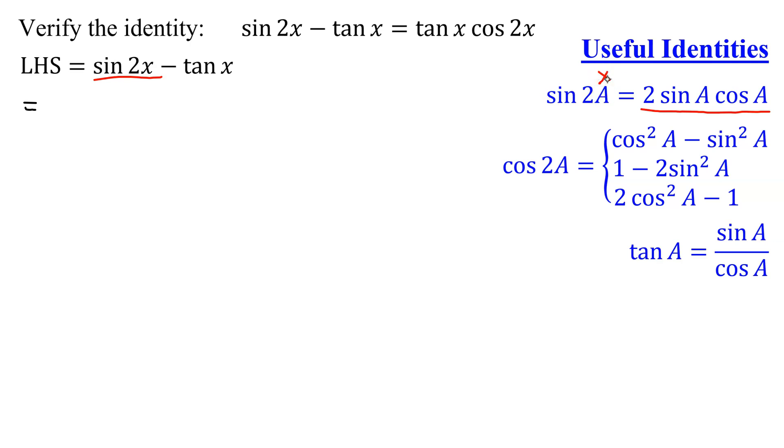So I don't have the sine of 2a. I have the sine of 2x, which is going to be 2 sine x cosine x. So I'm going to take the sine of 2x, followed by my minus the tangent of x.